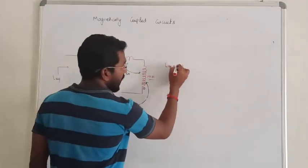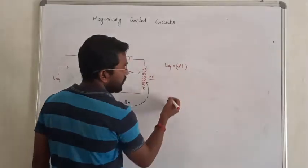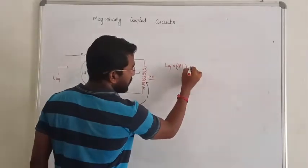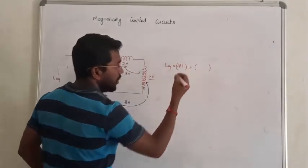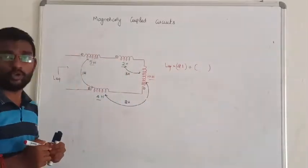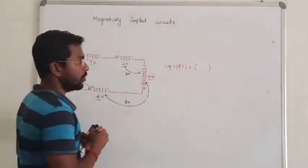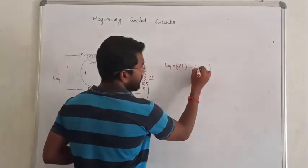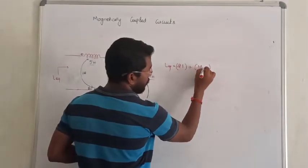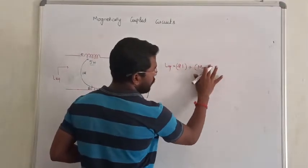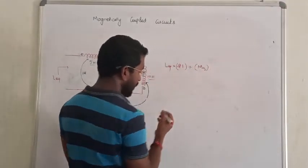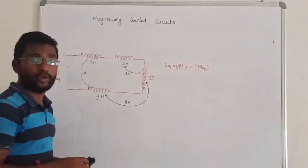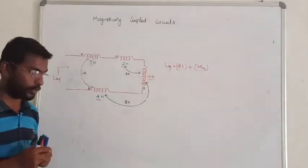L self-inductance is faster. Plus, bring the mutual inductance. The mutual inductance is controllable. That is M equal to — that is total mutual inductance. Let me show you. Mutual inductance is controllable. I will check the polarity.